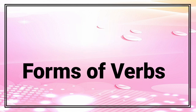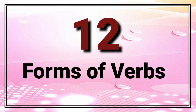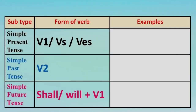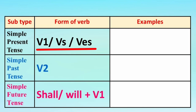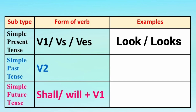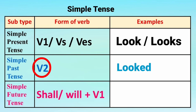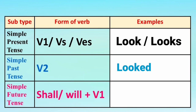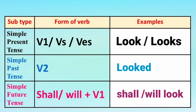या बारा काळांमधे क्रियापदाचे नेमके कोणते रूप वापरतात ते आता आपण सविस्तर पाहणार आहोत. Simple Present Tense मधे क्रियापदाचे पहिले रूप — म्हणजेच V1 किंवा VS किंवा ES वापरतात. For example: Look, Looks. Simple Past Tense मधे V2 — म्हणजेच Past Tense रूप. Look चे Past Tense आहे Looked. Simple Future Tense मधे Shall किंवा Will नंतर V1 वापरतो. For example: Shall / Will + Look.